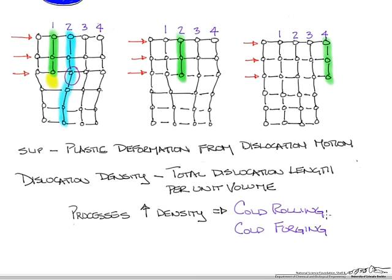In these cases, we're assuming that our material is below its recrystallization temperature. So for cold rolling and cold forging, these are examples of processes below recrystallization.